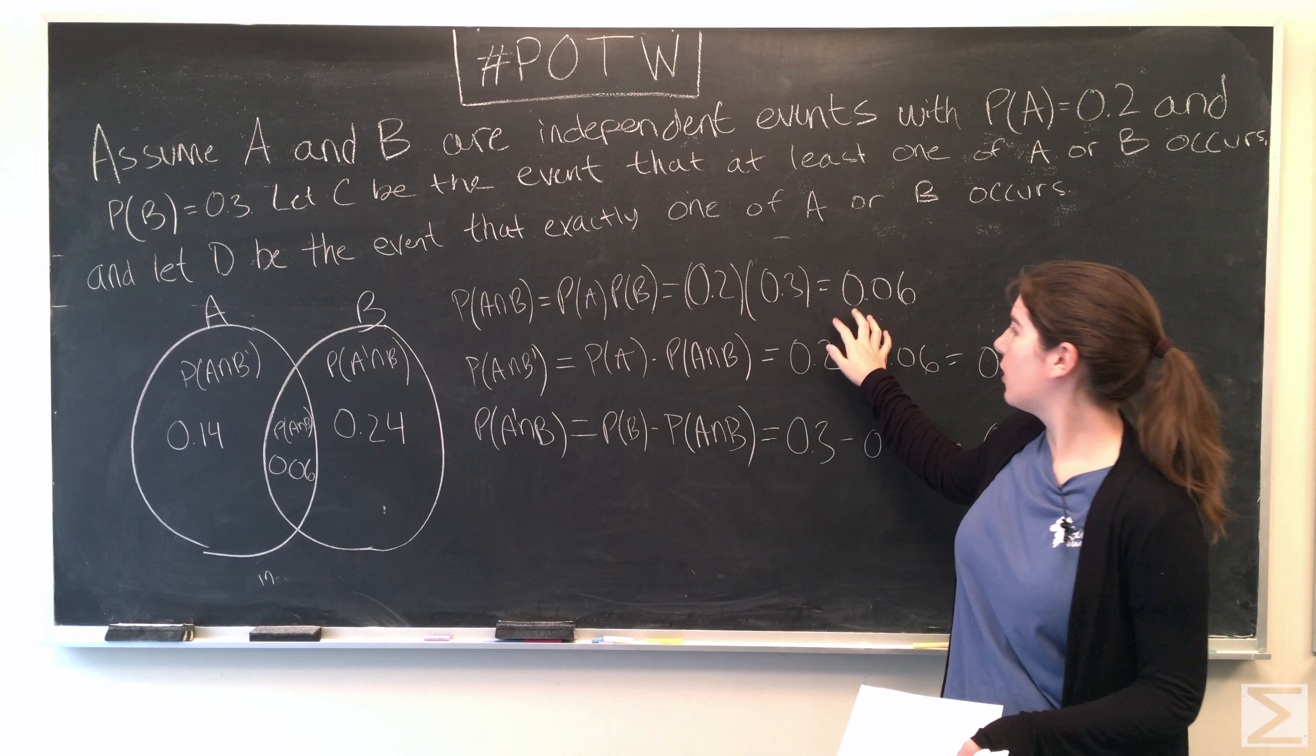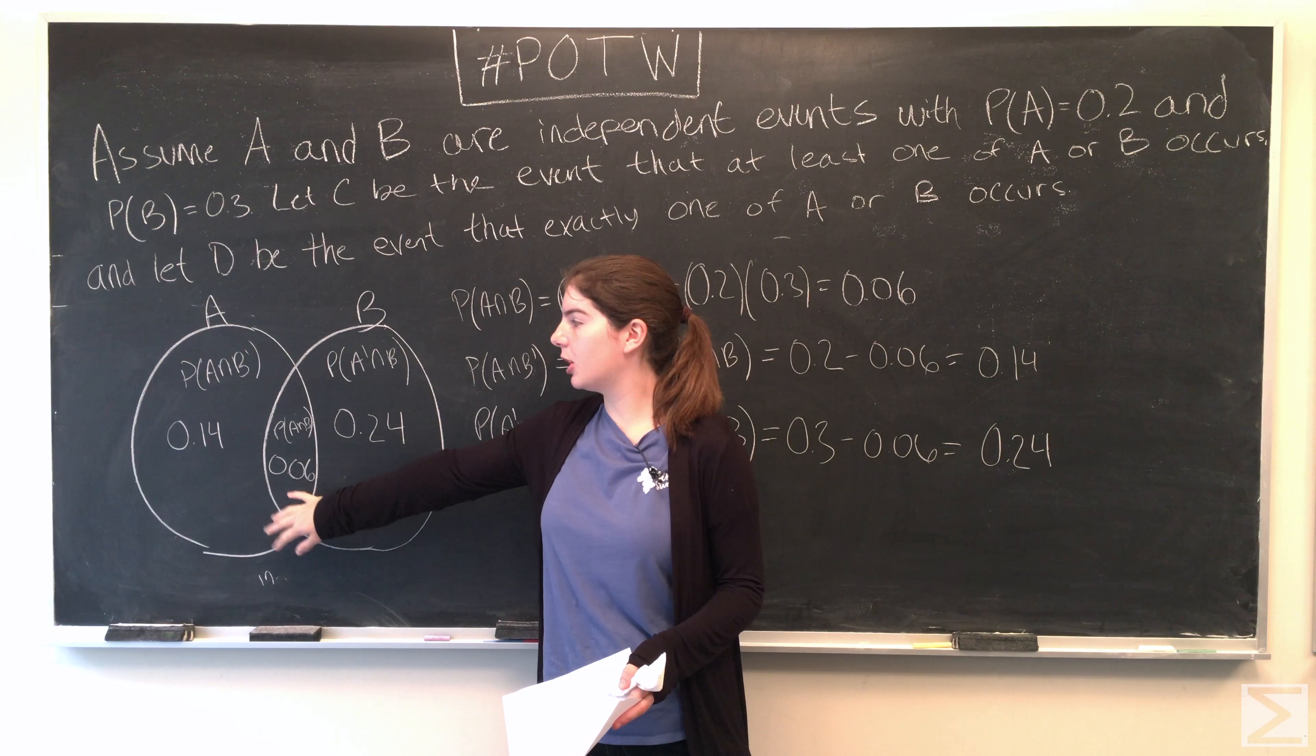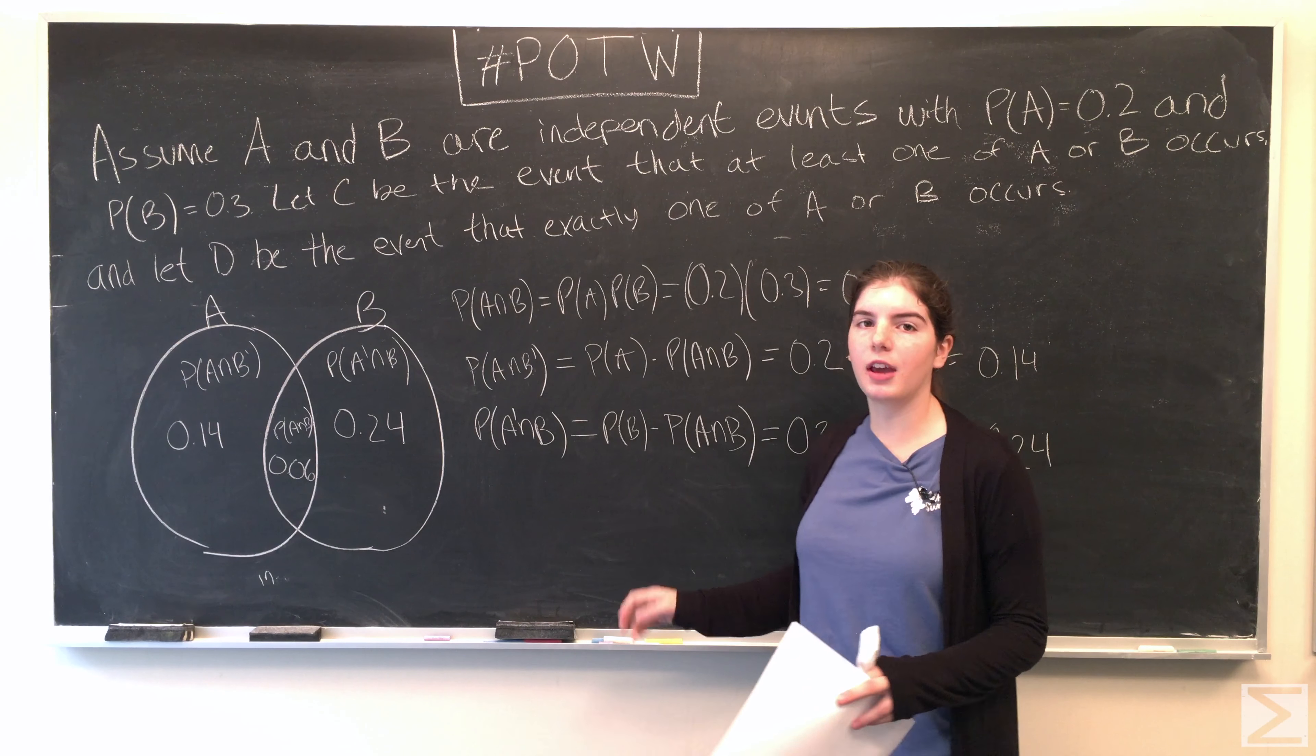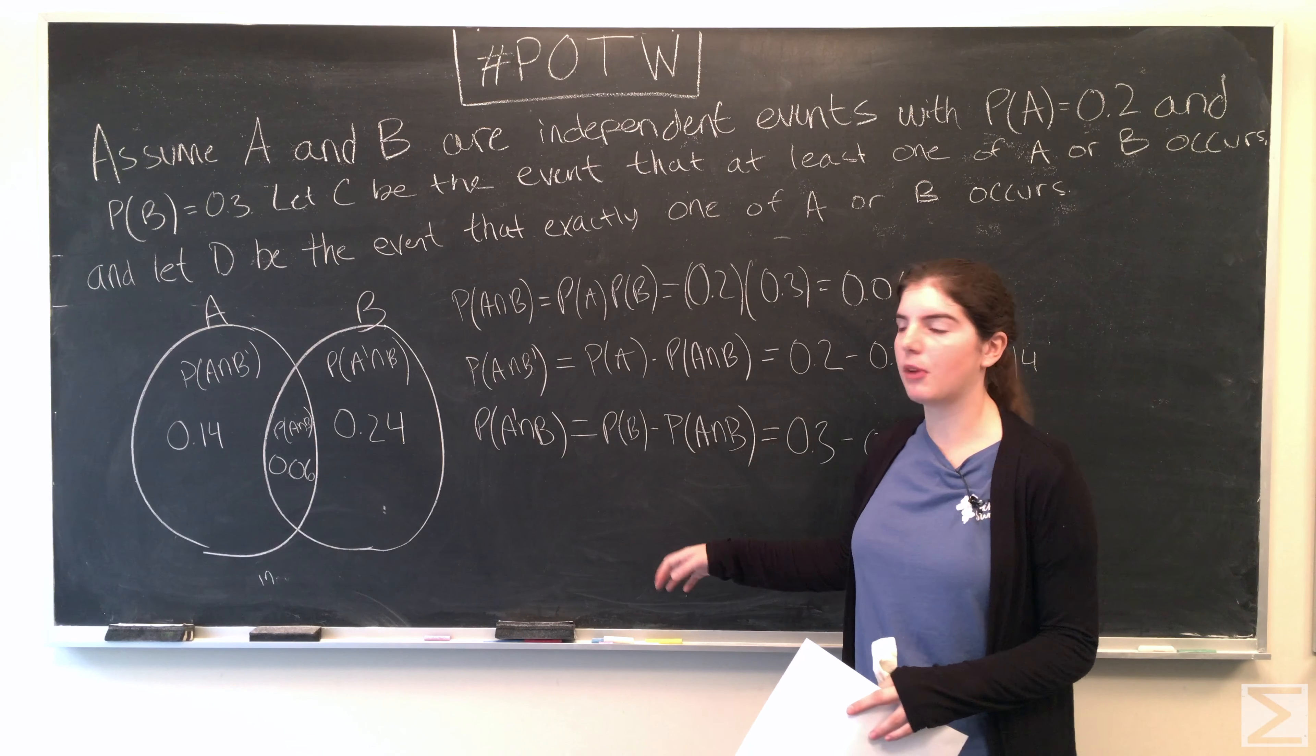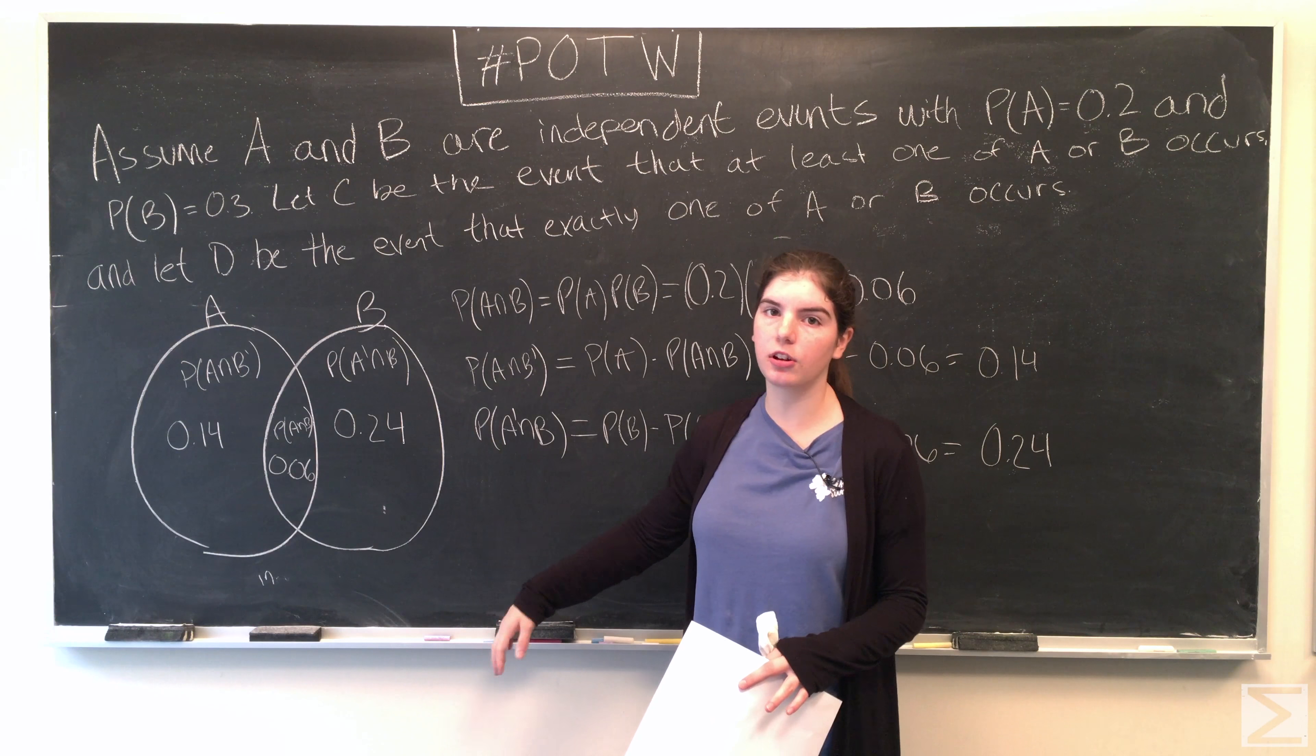So we have that their intersection is 0.06, and then the probability that A occurs but B doesn't occur is the probability of A minus the intersection, and then the probability that B occurs but A doesn't is the probability of B minus their intersection. Now that we have this filled out, we can start answering the questions.